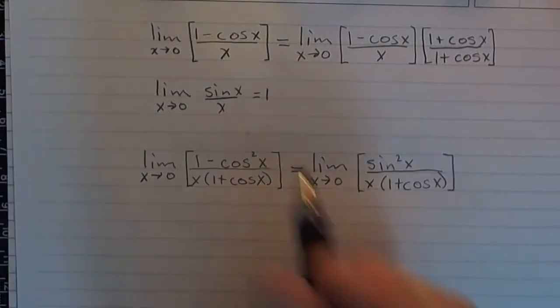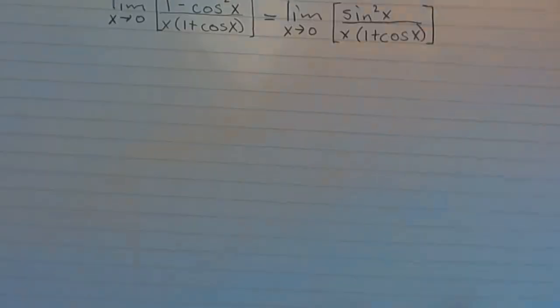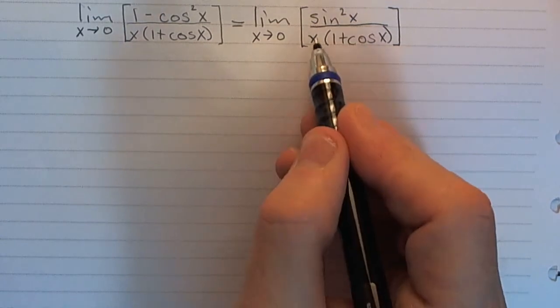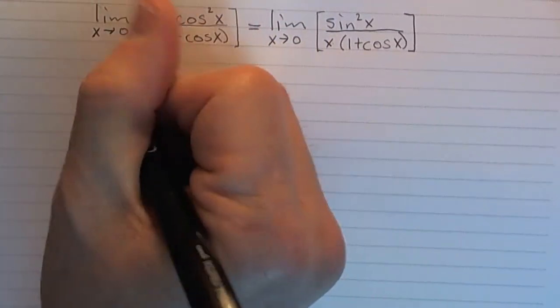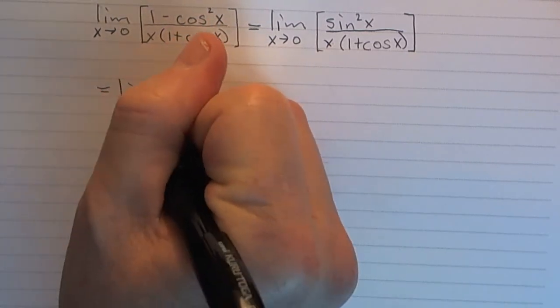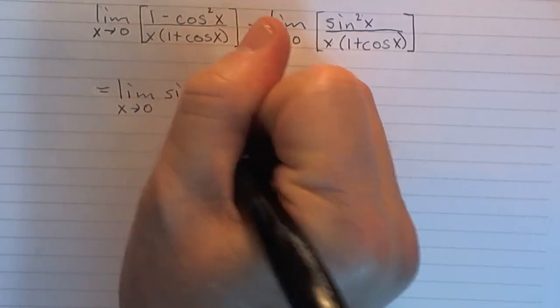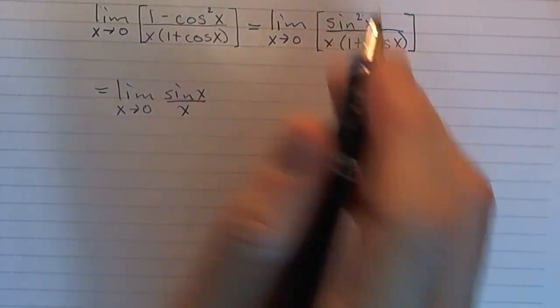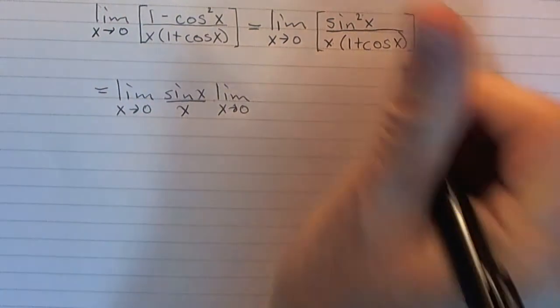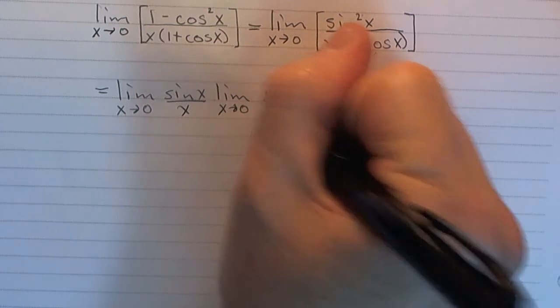Now, I know I'm going to see if I can utilize this limit right here, sine x over x. And I look down here, and I do have sine x over x, but I've got sine squared x over x. So let me just do some rearranging here. I've got the limit as x goes to 0 of sine x over x, times the limit as x goes to 0 of sine x over 1 plus cosine x.